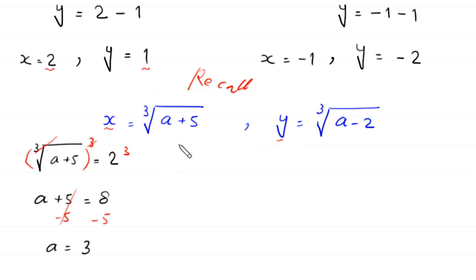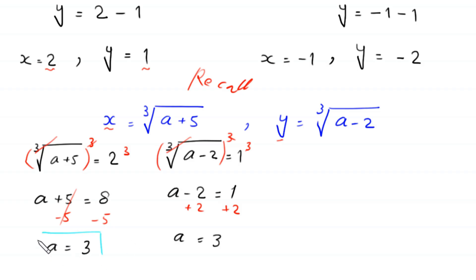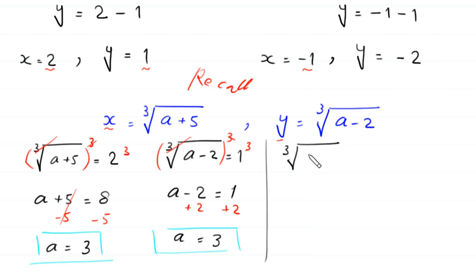When y = 1, the equation becomes ∛(a-2) = 1. Cubing both sides gives a - 2 = 1. Adding 2 to both sides gives a = 3. Both equations confirm a = 3. When x = -1, the equation becomes ∛(a+5) = -1.